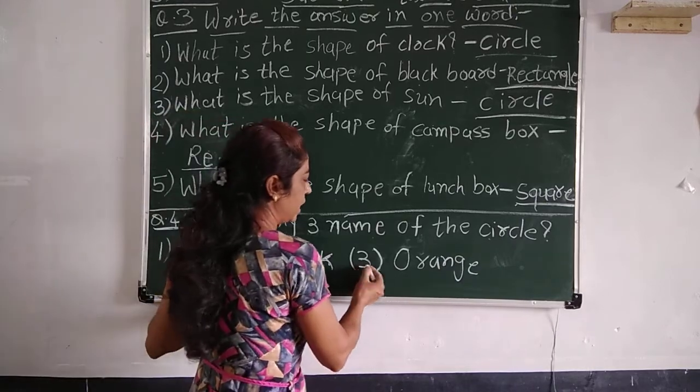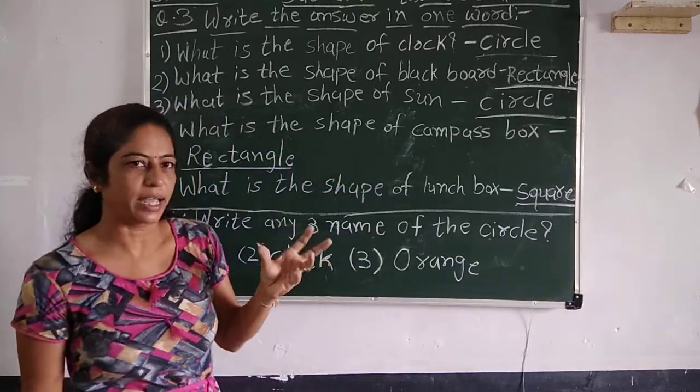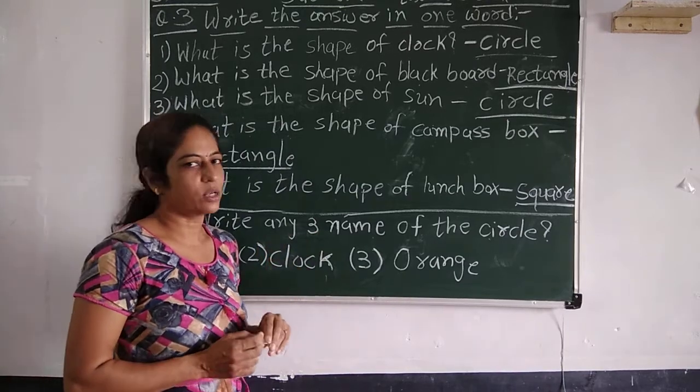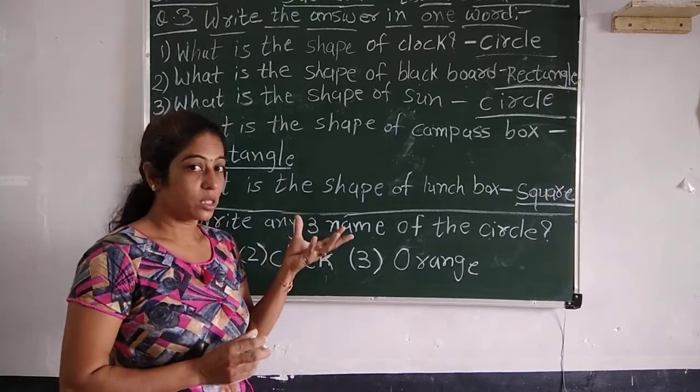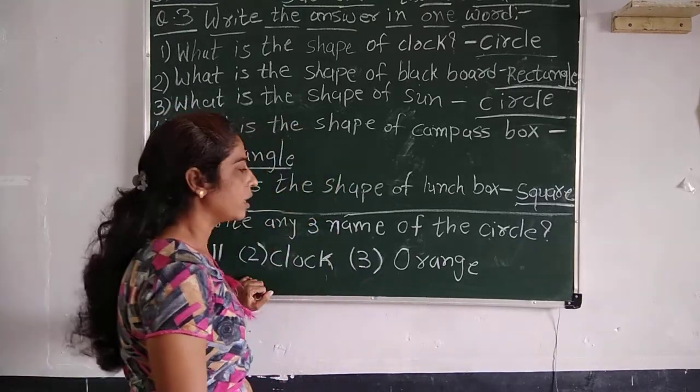And the third one number is O-R-A-N-G-E, orange. Orange is round. Orange is also circle.